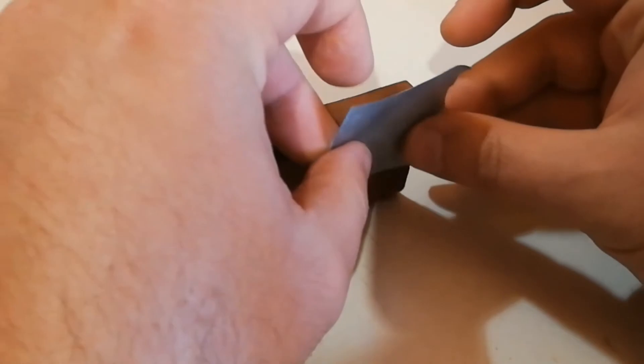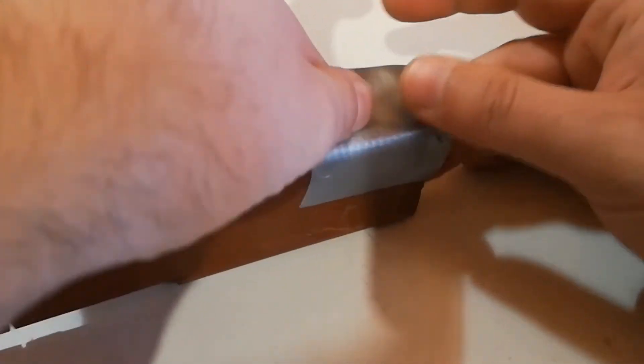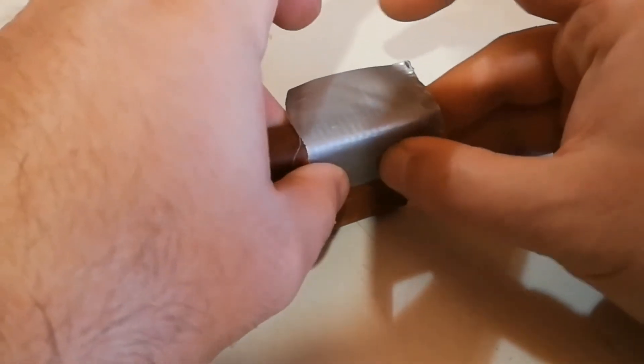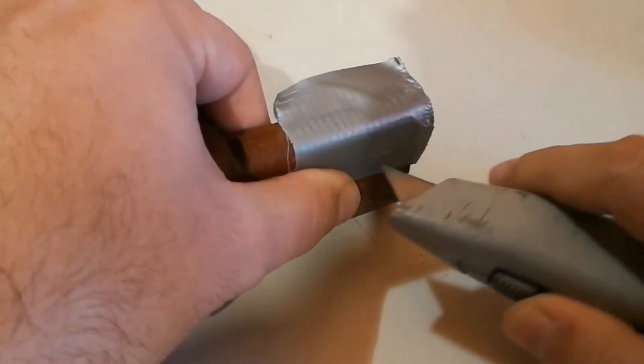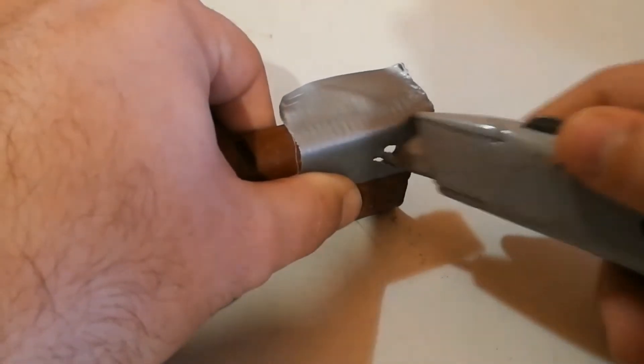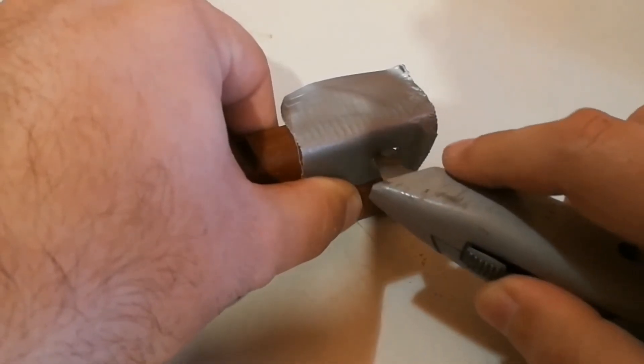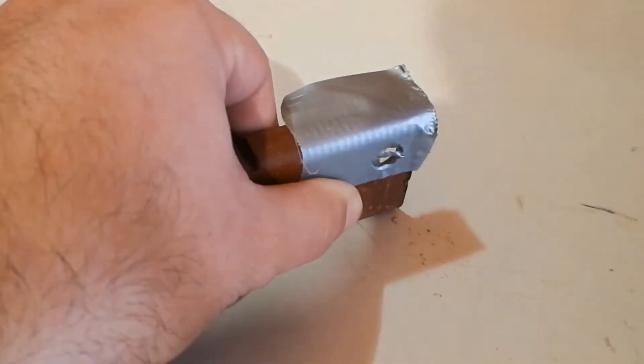Personally I use duct tape whenever I can. Duct tape actually increases friction between the walnut and the metal part, and it stops the walnut from spinning.